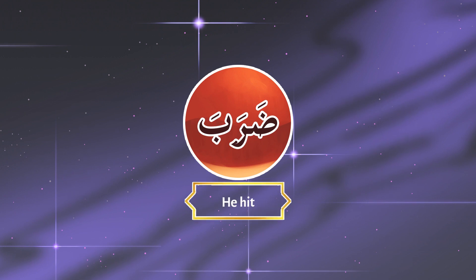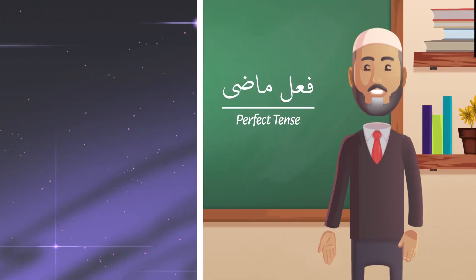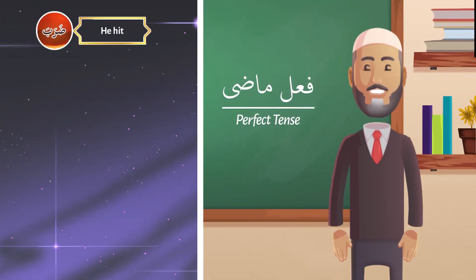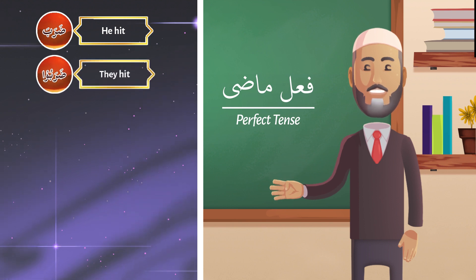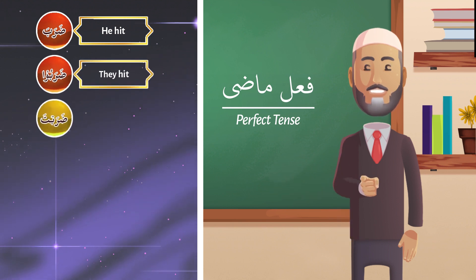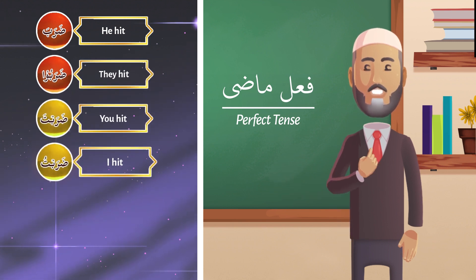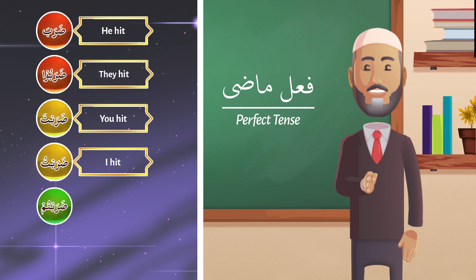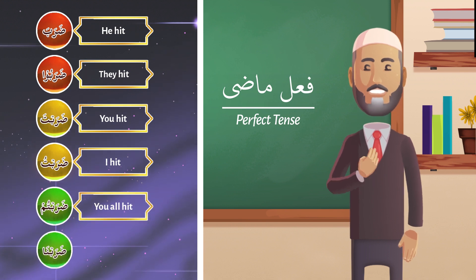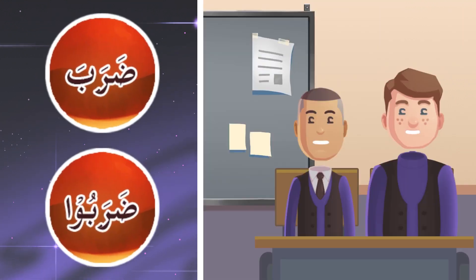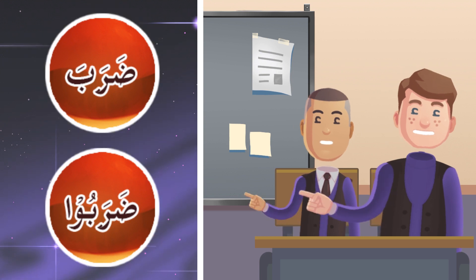Let us take the first verb: ضربة. ضربة means 'he hit.' Can you translate using TPI? ضربة — he hit. ضربوا — they hit. ضربت — you hit. ضربت — I hit. ضربتم — you all hit. ضربنا — we hit.